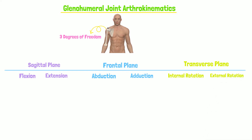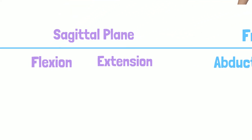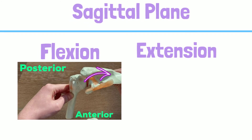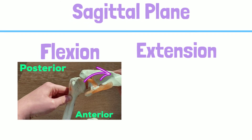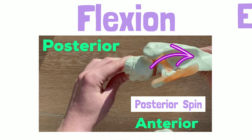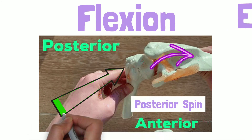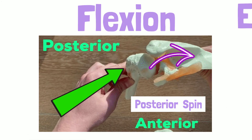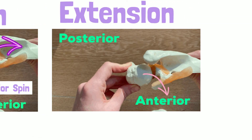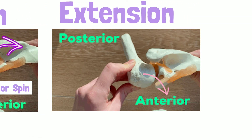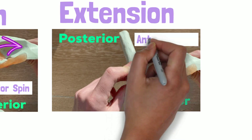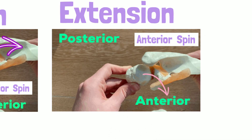Let's examine the sagittal plane first. Here, the humerus spins on top of the glenoid. With flexion, the humerus spins posterior — observe the greater tubercle move posterior. With extension, the humerus spins anterior — observe the greater tubercle move anterior.